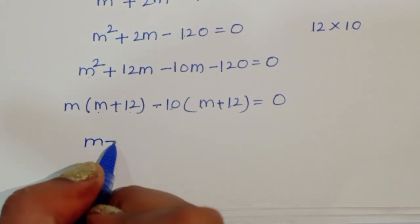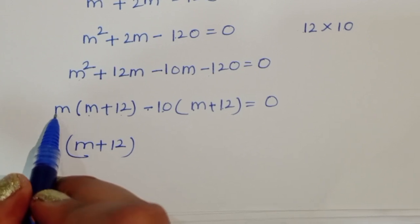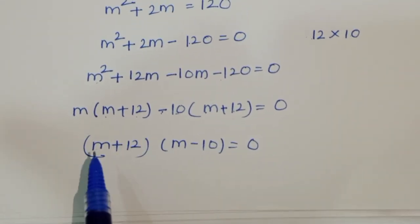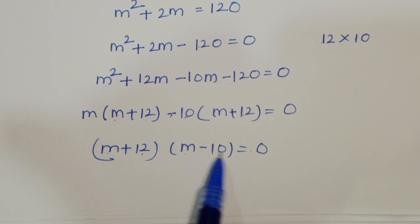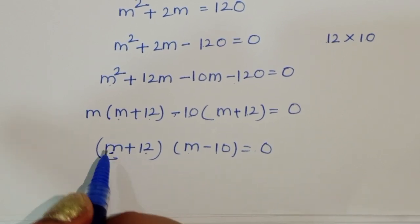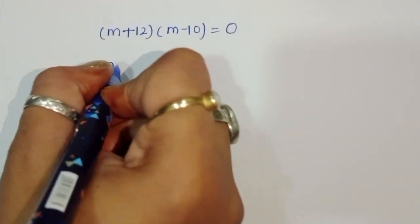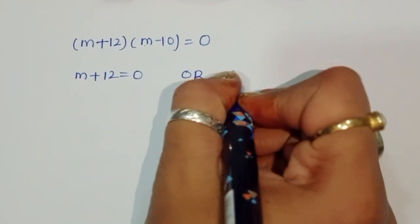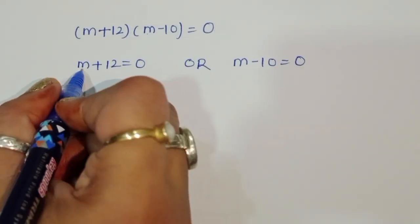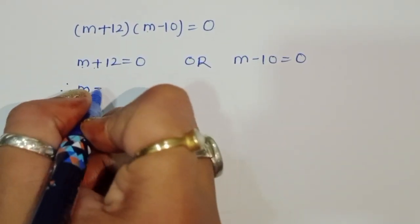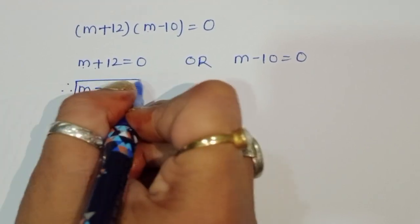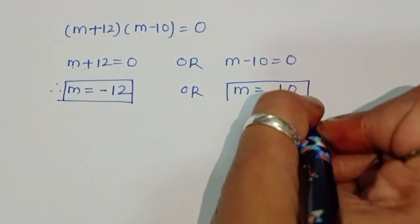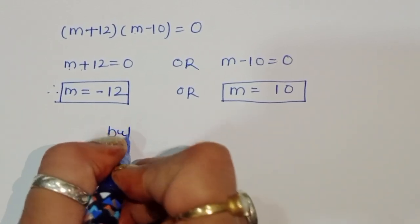From (m + 12)(m - 10) = 0, we get two equations: m + 12 = 0, giving m = -12, or m - 10 = 0, giving m = 10.